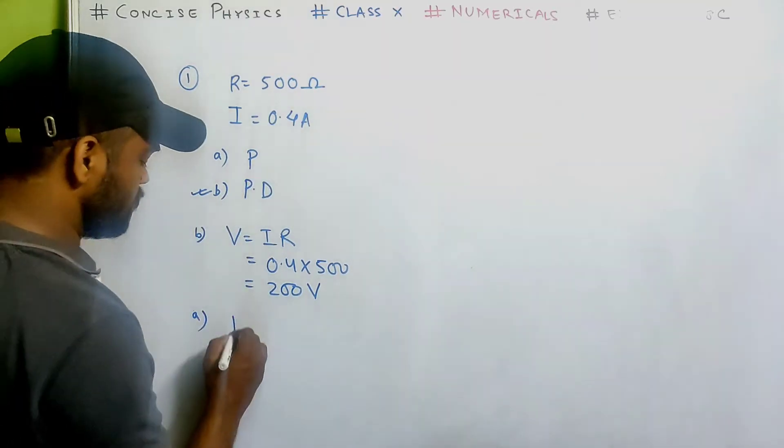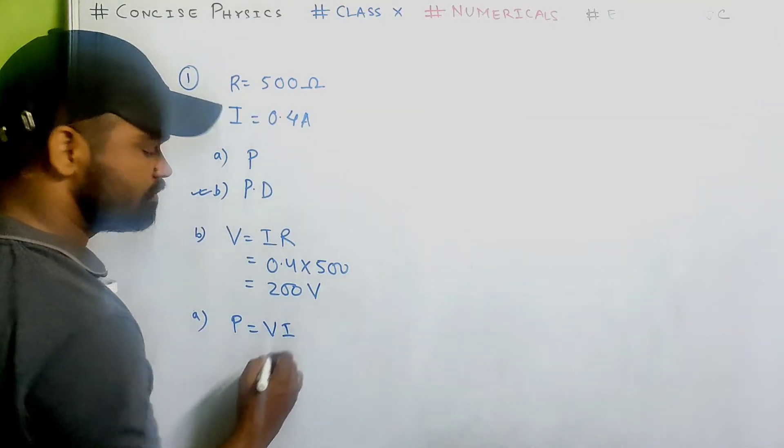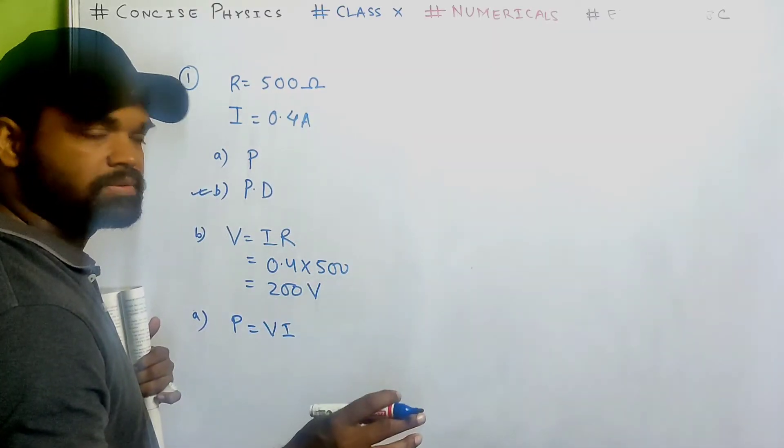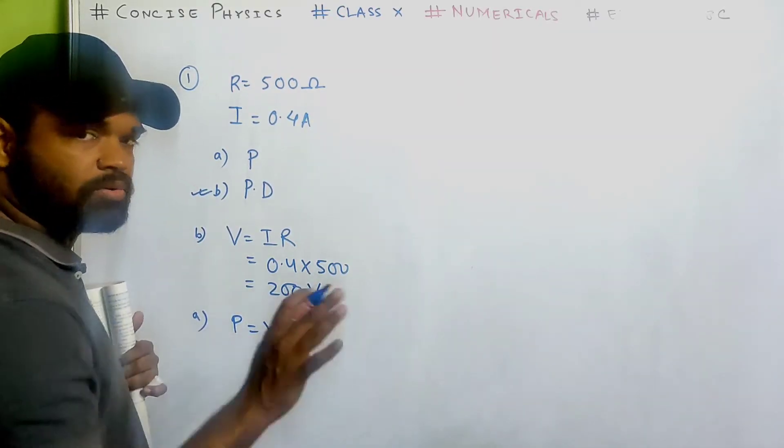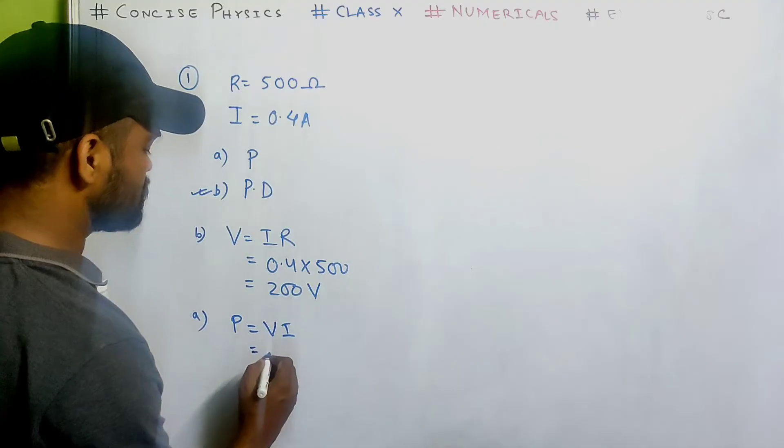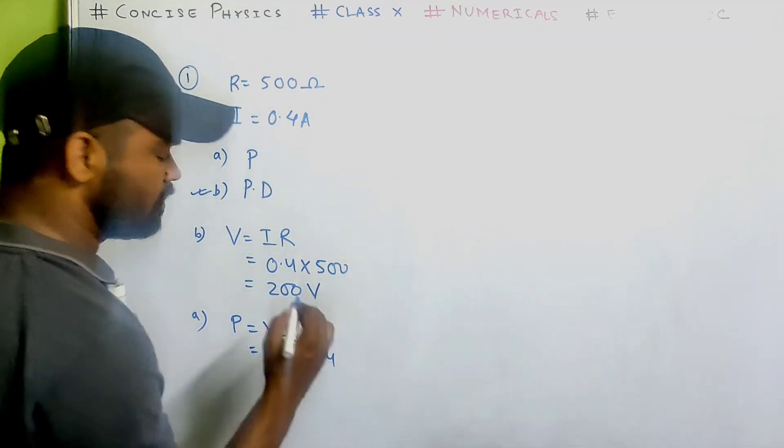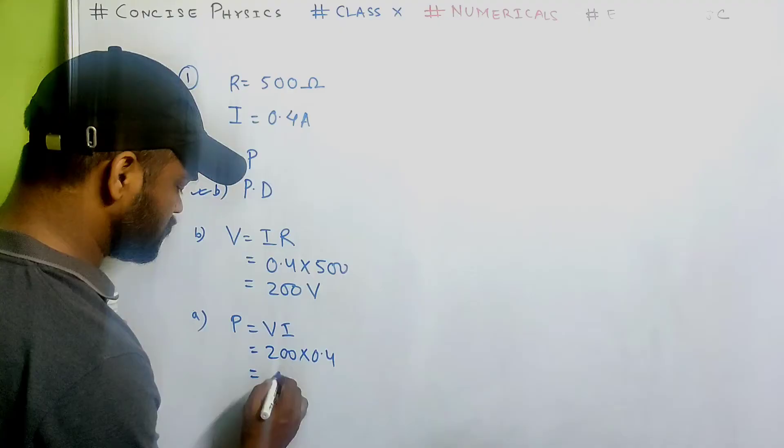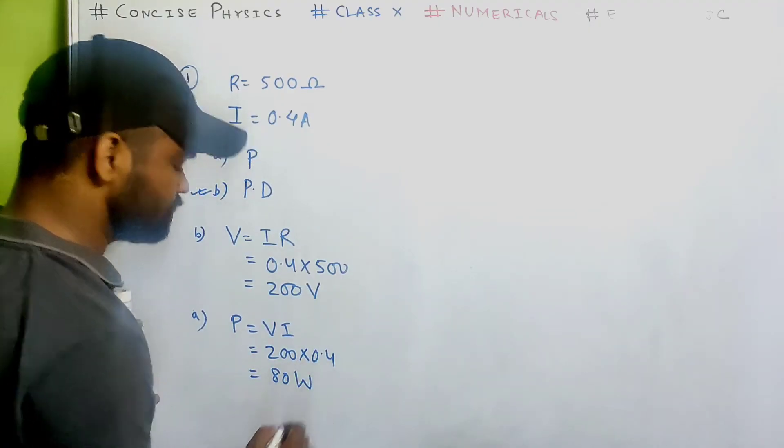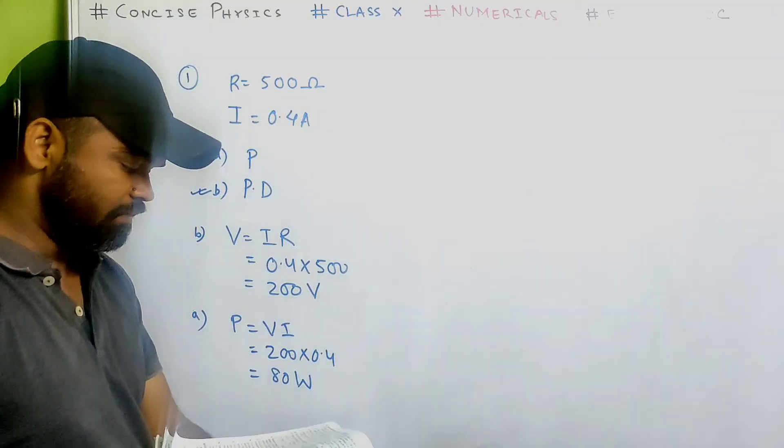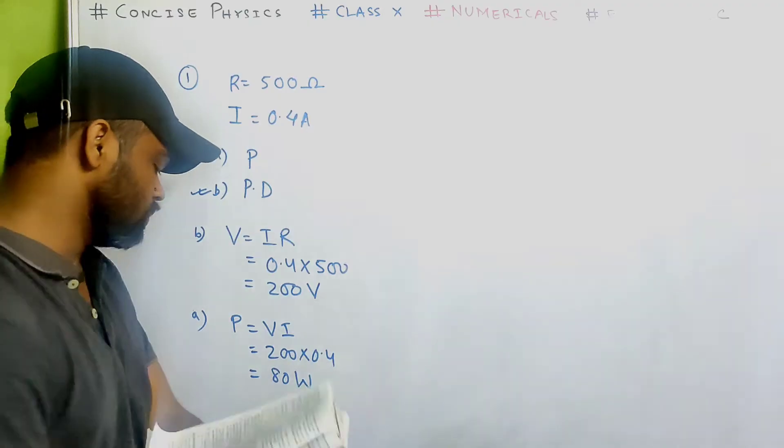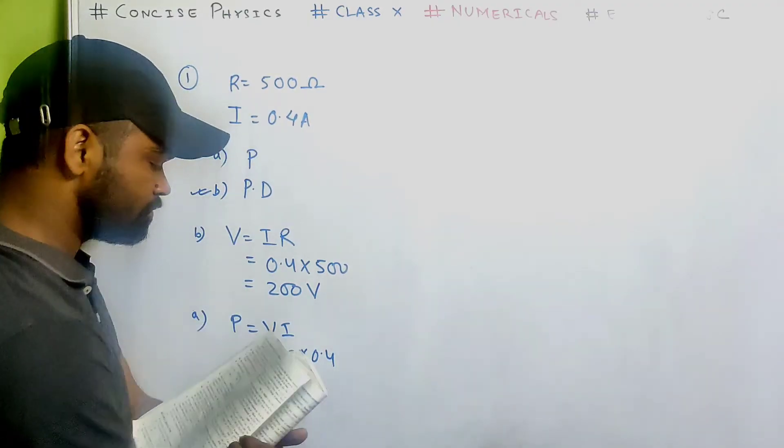Number a, power. Power equals to vi. There are lot of formulas. One of the formula is this. To calculate power vi just substitute the value. 200 multiplied by 0.4. That's 80 watt. That's my power. Simple use of formula.